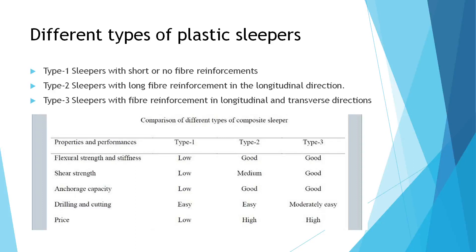Comparing all three types: Type 1 has low drilling and cutting capability, low price, and low shear strength. Type 2 has good shear strength, good cutting and drilling properties, but a higher price. Type 3 also has a high price, high load capacity, and good shear strength. From this comparison, Type 1 sleeper is identified as the most cost-effective type.